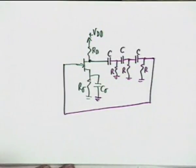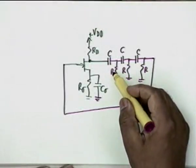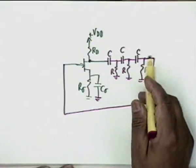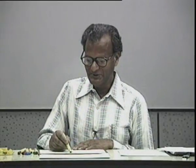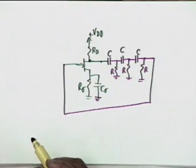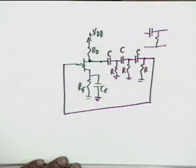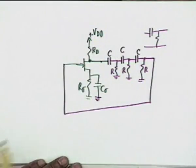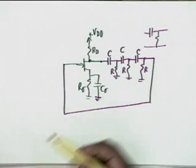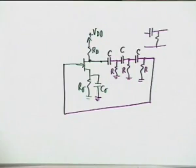A 180° phase shift could also be produced if the C's and R's are interchanged, giving a leading phase shift. But 180° leading is the same as 180° lagging — both place the signal on the negative real axis. So you could use an RC network instead, but the problem is that you would require an extra coupling/blocking capacitor.